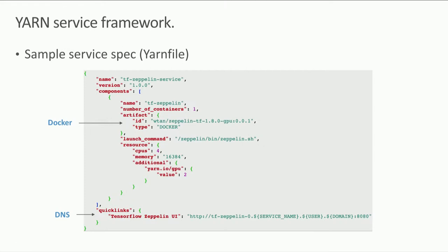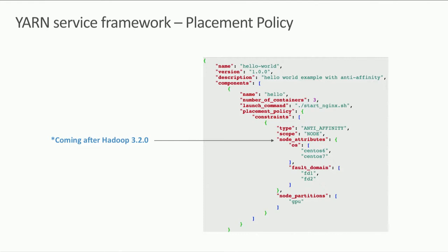We can also define a quick link that appears on the services page, so users can click directly to the TensorFlow Zeppelin UI from YARN without remembering all DNS names. For the service placement policy, we can tell YARN how to place the service — for example, specifying anti-affinity for an engine server so no more than one task runs per node, along with node attributes like OS, fault domain, or node partition. Node attribute support is coming after Hadoop 3.0.